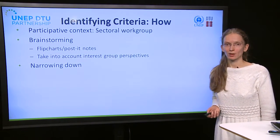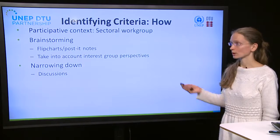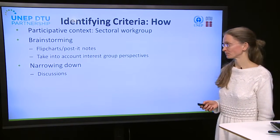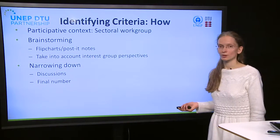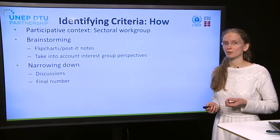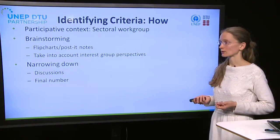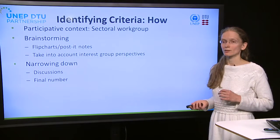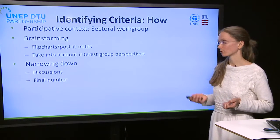The second step would be to narrow down the criteria. This can be done through discussions in the same sectoral group meeting. The final number of criteria should be as low as is suitable for making a decision, but normally we would recommend no more than 7 to 10 criteria for the TNA process, as fewer criteria makes the rest of the process simpler.